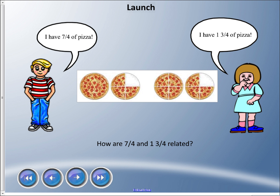Welcome back everyone. We're going to move along here on our fraction learning journey and do a little bit more work today with mixed numbers and improper fractions. Here's a little comic with two characters: one says 'I have seven quarters of pizza' and the other says 'I have one and three quarters of pizza.' How are they related?